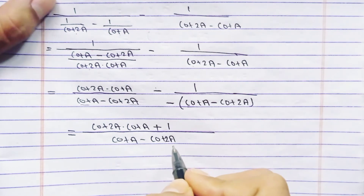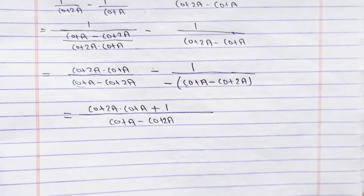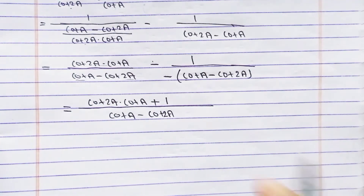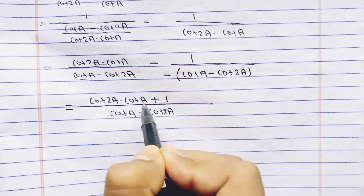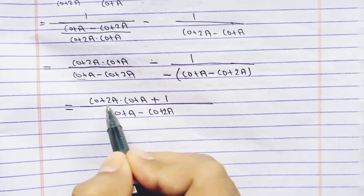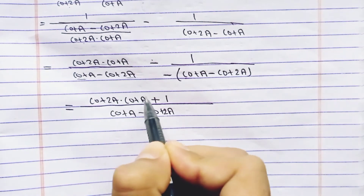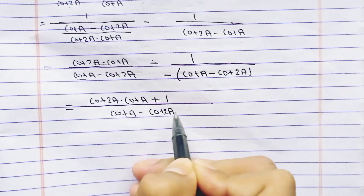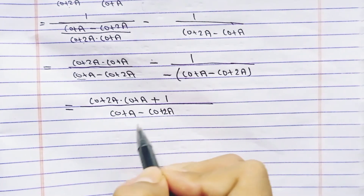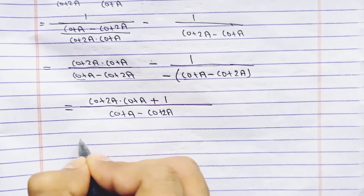This can be converted using the formula. If 2a is a and a is b, then this can be compared to the formula: cot a into cot b plus 1, upon cot b minus cot a — which is the formula for cot(a minus b).